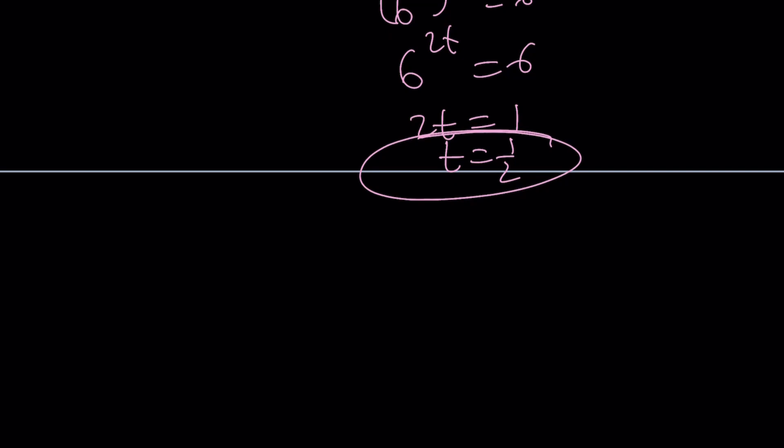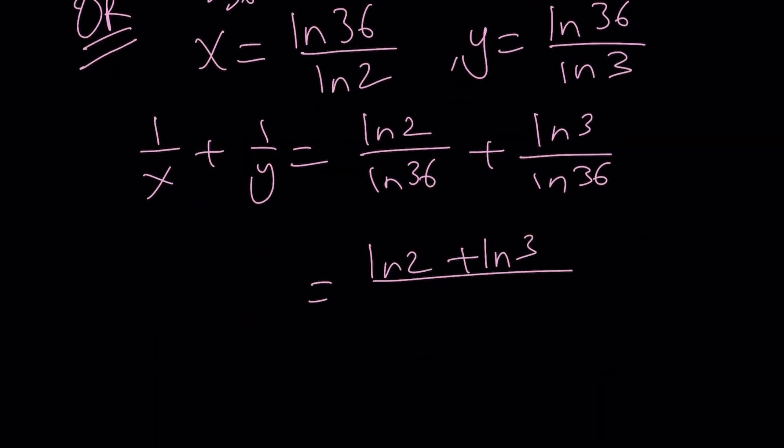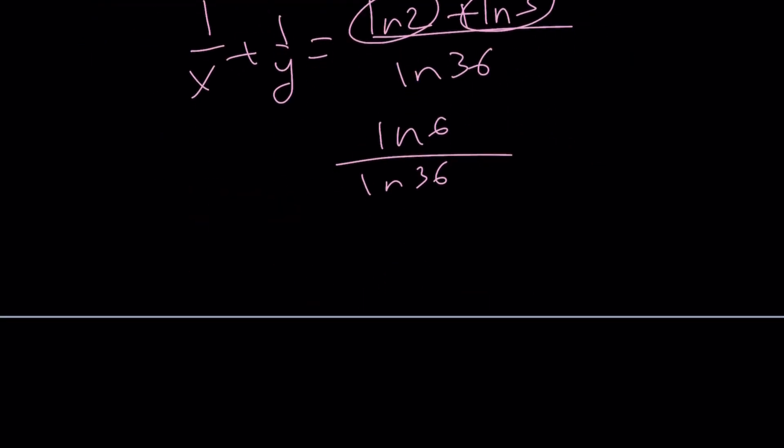But you could also do this with the first method. So it's kind of like a 1b. x equals ln 36 over ln 2. Where does this come from? Use change of base, right? And y is ln 36 over ln 3. And then we're going to add 1 over x plus 1 over y, which is ln 2 over ln 36 plus ln 3 over ln 36. Two fractions with the same denominator. I can't help but add them, right? ln 2 plus ln 3 over ln 36. But this can be combined into ln 6 over ln 36. ln 36 is ln 6 squared. Allow me to write it that way and move the 2 to the front. 2 ln 6, cancel out, and you end up with 1 half. That's what's beautiful about math. You can follow different paths. You'll arrive at the same answer if you follow the right paths.